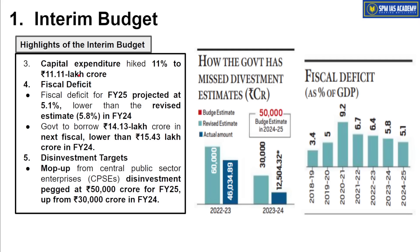India is a star performer in the world economy, and the major reason behind this good performance is huge capital investment by the Government of India in infrastructure development in recent years. The most important aspect is fiscal deficit — for 2024-25, the budget estimate fiscal deficit will be 5.1% of GDP, which is lower compared to the current year's revised estimate of 5.8%.